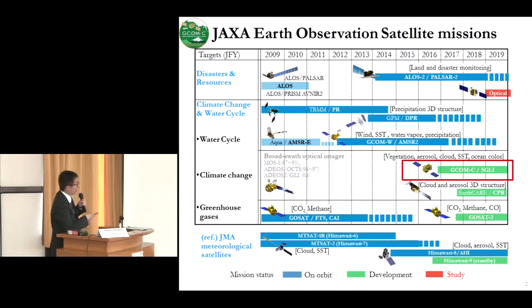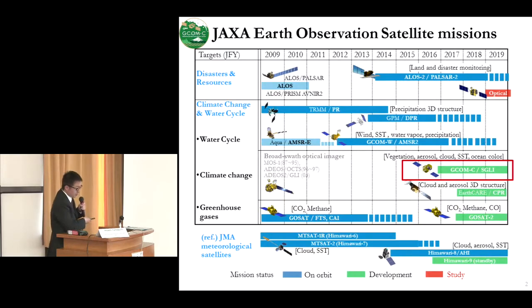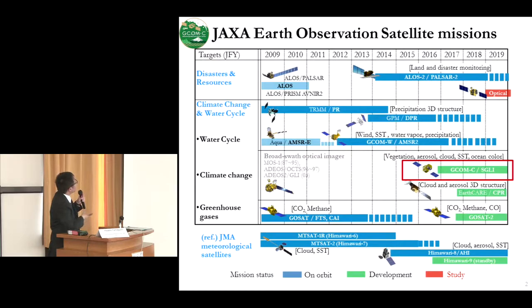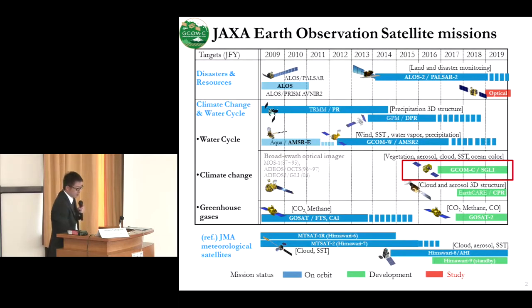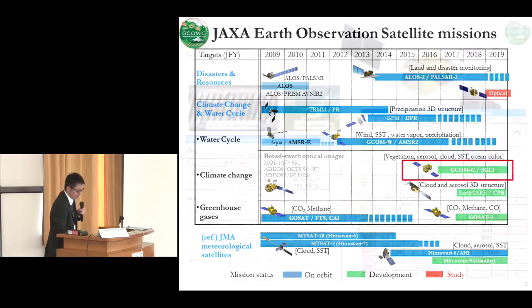This slide shows JAXA Earth Observation Satellite missions. The blue color indicates satellites already on orbit, and the green color indicates those in development. There are many targets and satellites, and I would like to recommend monitoring water quality using the GCOMC SGLI, which I will explain in detail from the next slide.